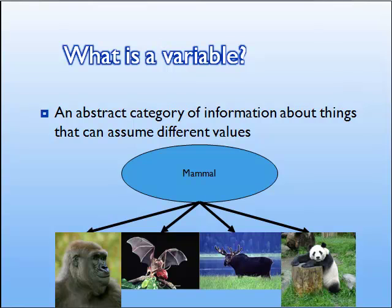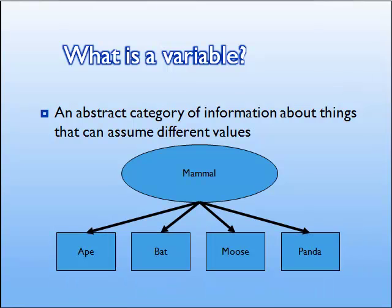Here's an example of this. Suppose we have four animals, and we just wanted to list what type of mammal are these four things. We would give them words like ape, bat, moose, and panda. We could go more specific than that, like what kind of ape, exactly which species of bat. But here we have a variable that is type of mammal, and it's not quantitative.